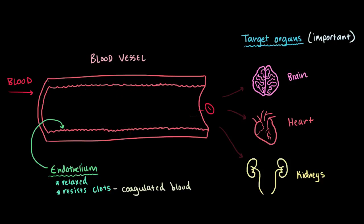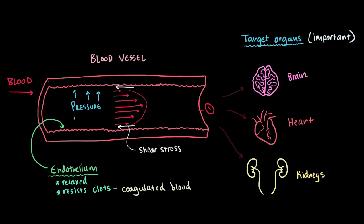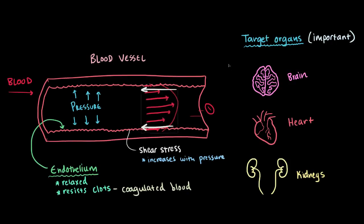And when it does this, it causes a certain amount of stress from friction along the walls. And we call this shear stress. Now as our pressure in the blood vessels increases, the fluid's going to be pushing harder against the walls as it moves by. And so your force from friction increases and your shear stress increases too. This higher shear stress can start to damage the endothelium or this inner lining of the blood vessels.